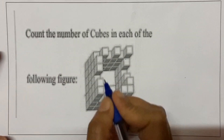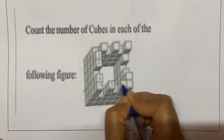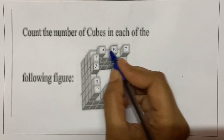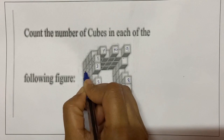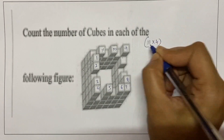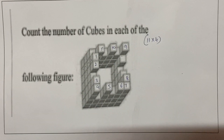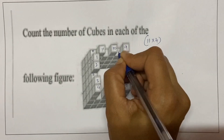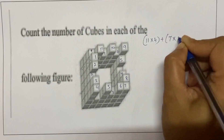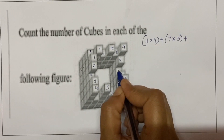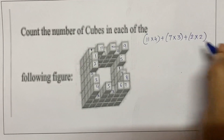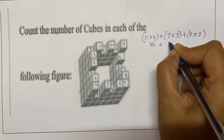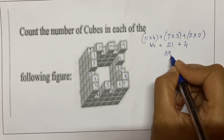To count the cubes, first we have to count the columns: 1 through 11 — so 11 columns with 4 cubes. Next, with 3 cubes how many columns? 1, 2, 3, 4, 5, 6, 7 — so 7 columns with 3 cubes. Next with 2 cubes there are 1, 2 — 2 columns with 2 cubes. So 11 into 4 is 44, plus 7 into 3 is 21, plus 2 into 2 is 4. Total 69 cubes in this figure.